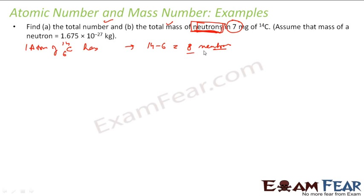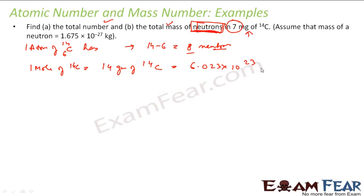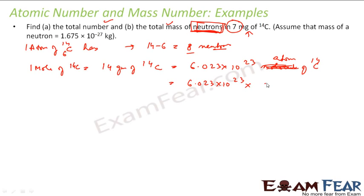One atom of Carbon-14 has 8 neutrons. Now working in grams: one mole of Carbon-14 = 14 grams = 6.023×10²³ atoms of Carbon-14. One atom of carbon has 8 neutrons, so 14 grams of Carbon-14 has 6.023×10²³ × 8 neutrons.